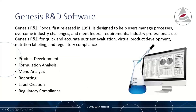Genesis R&D Foods was introduced in 1991 to help address the need for convenient formula analysis and formatting of NLEA food labels for U.S. regulations. Over the years, Genesis has remained the go-to standard for product development, recipe analysis, and compliant nutrition labels. It also offers restaurant menu analysis and reporting. We offer label modules to prepare compliant labels for the U.S., Canada, the EU, and Mexico.